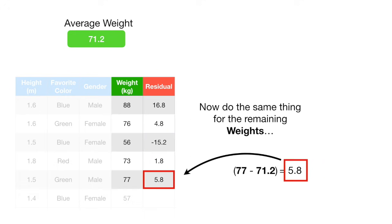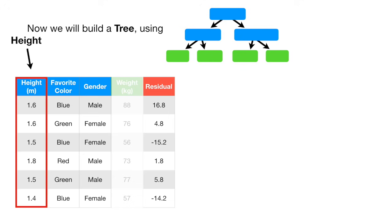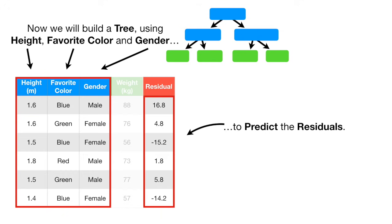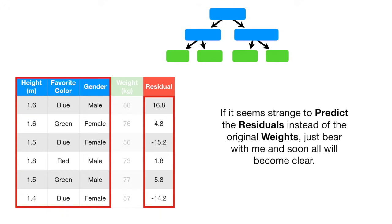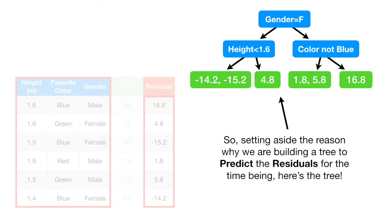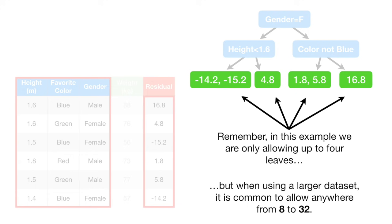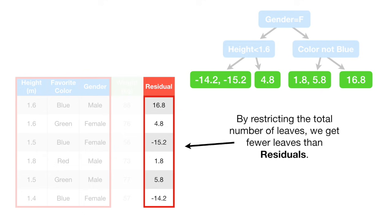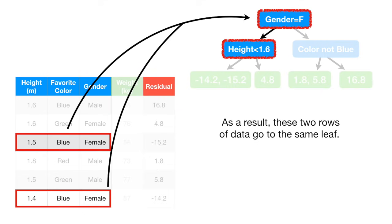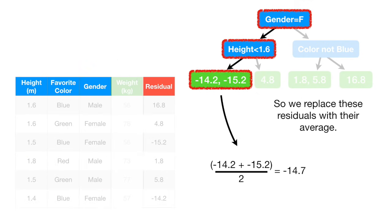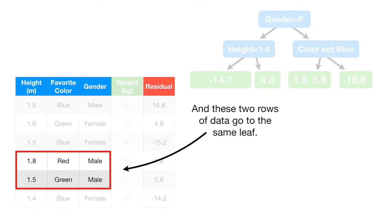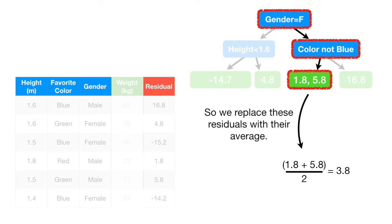Now we do the same thing for the remaining weights. Now we will build a tree using height, favorite color, and gender to predict the residuals. If it seems strange to predict the residuals instead of the original weights, just bear with me and soon all will become clear. Setting aside the reason why we are building a tree to predict the residuals for the time being, here's the tree. Remember, in this example we are only allowing up to 4 leaves. By restricting the total number of leaves, we get fewer leaves than residuals. As a result, some rows of data go to the same leaf, so we replace those residuals with their average.